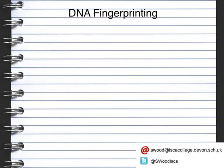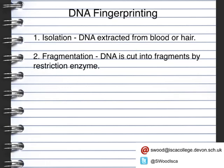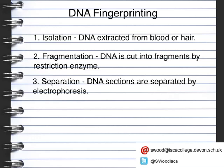So how is DNA fingerprinting done? Firstly, the DNA is isolated, which is either extracted from blood or hair. Secondly, the DNA is cut into fragments by restriction enzymes — this is known as fragmentation. The third part is the separation, where the DNA sections are separated by a process known as electrophoresis. That's what we saw in the previous section where we had the DNA sections separated for the suspects.